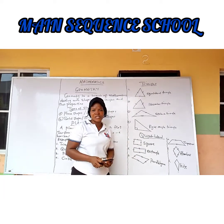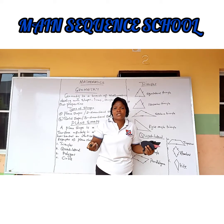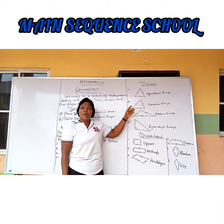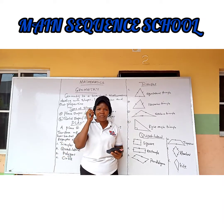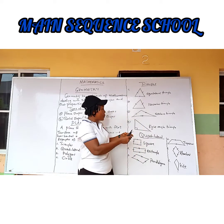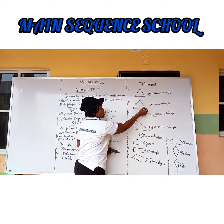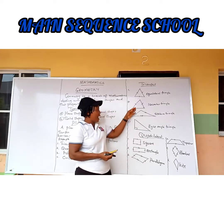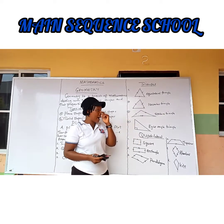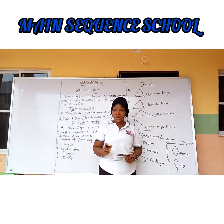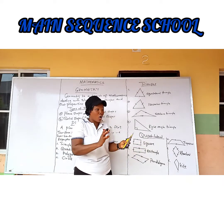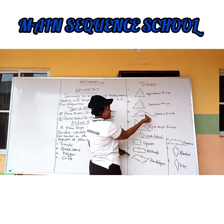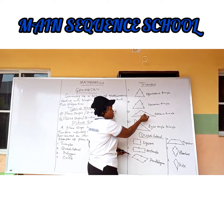The second type is the isosceles triangle. It is an isosceles triangle because only two of its sides are equal. Likewise, the base angles of an isosceles triangle — the bottom angles — are equal. Thirdly, we have a scalene triangle. A scalene triangle has none of its sides equal, and the angles are not equal as well.